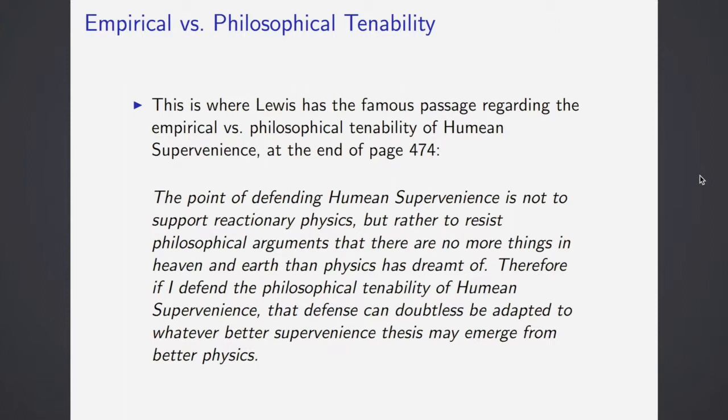Therefore, if I defend the philosophical tenability of Humean supervenience, that defense can doubtless be adapted to whatever better supervenience thesis may emerge from a better physics. So that's sort of interesting. Quantum physics and its wave functions and probability, innately probabilistic, some physicists have suggested that maybe spatiotemporal properties aren't fundamental. He doesn't want to be that reactionary.